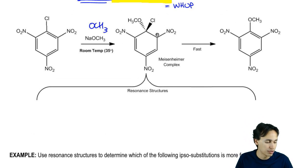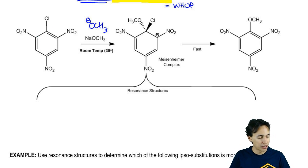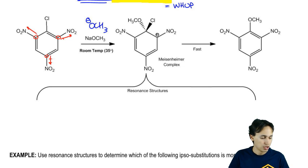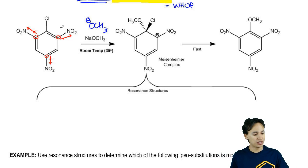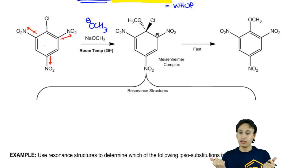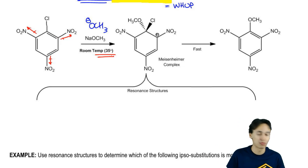Here I have a strong nucleophile, OCH3 negative, and a leaving group. Notice that on my ortho and para positions, I have all withdrawing groups. Normally, for the Dow process, I would have required 350 degrees Celsius to proceed forward. But it turns out these withdrawing groups are so stable and so strong that I'm actually going to be able to proceed forward at room temperature.